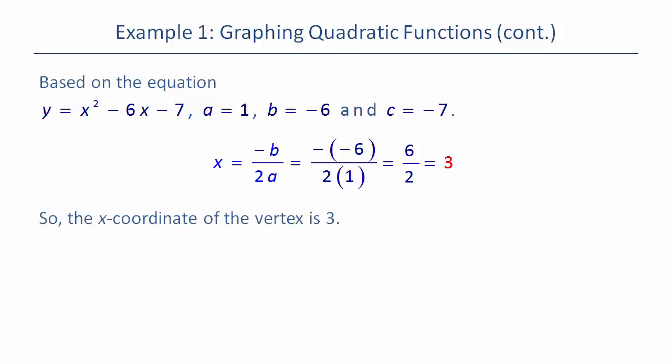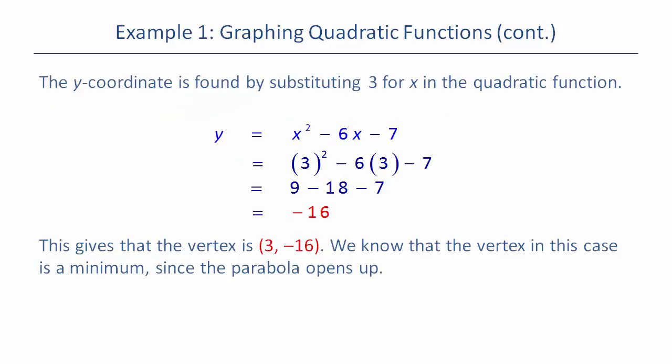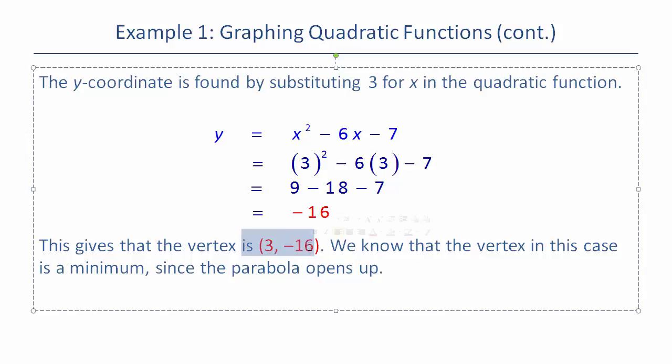We take that 3 we plug it back in. So plug it in for x, square it, minus 6 times it minus 7. Do all that work you get -16. Now you have the vertex (3, -16).